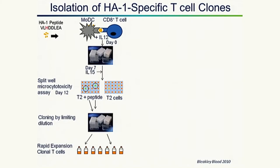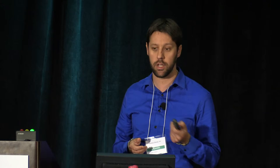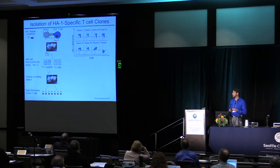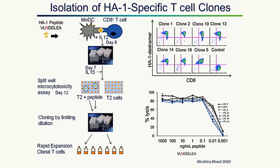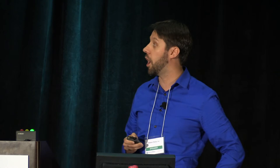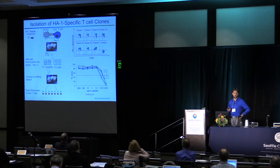For the cloning of the cells, we pulsed dendritic cells with the antigenic variant of the peptide. After 12 days, we performed a split-well microtoxicity assay, pulsing T2 cells and looking for killing of T2 cells pulsed with the antigen or not. We identified seven clones that specifically kill T2 cells. Using an HA1 dextramer, we confirmed it recognized all seven clones. Peptide titration showed very good killing by all seven clones, even with very small amounts of peptide, with half-maximal killing at about 50 picomoles.